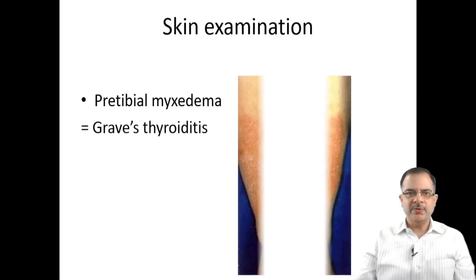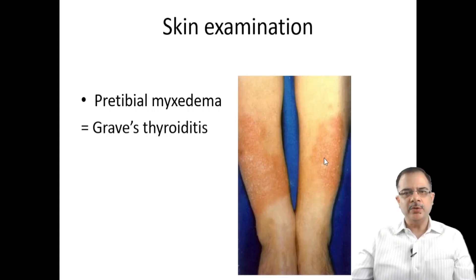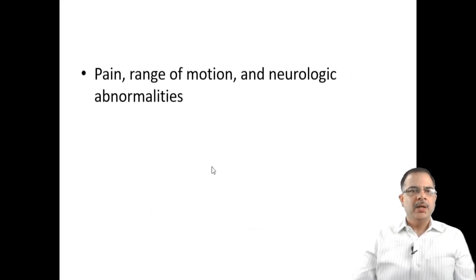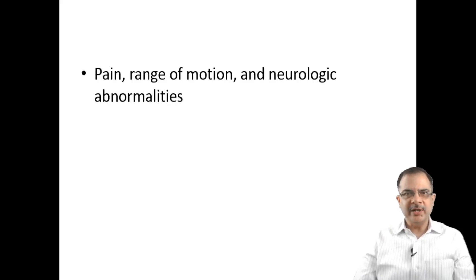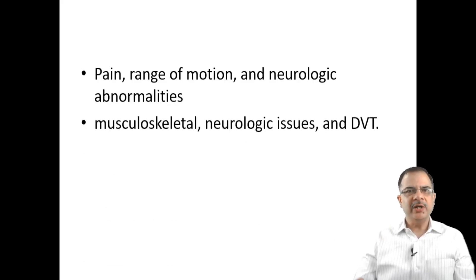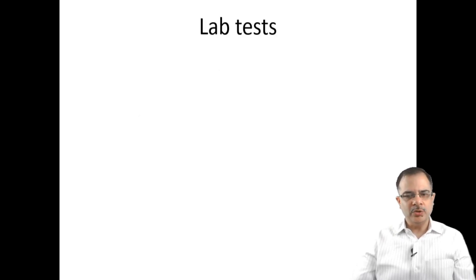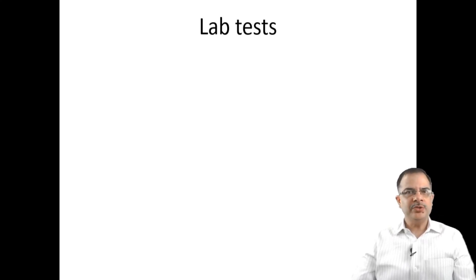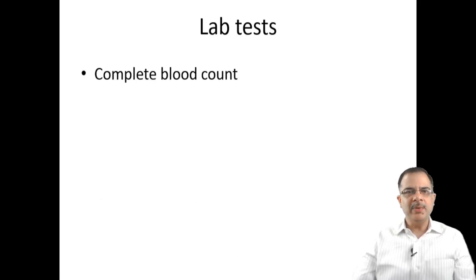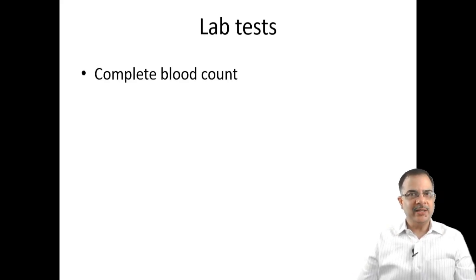Pretibial myxedema is suggestive of Graves' thyroiditis, present on the pretibial area. Assess pain, range of motion, and neurological abnormality associated with swelling. Pain is most likely associated with DVT or musculoskeletal causes. Neurological abnormality is seen in disorders like paralysis that lead to immobilization and swelling. For lab tests, a complete blood count is helpful — raised TLC and neutrophilia suggest cellulitis or infection.